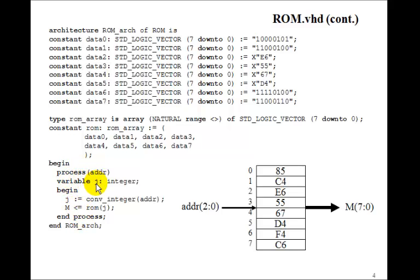We'll define a variable j of type integer, and then we'll set j equal to the address. Of course, we have to convert it to an integer. So this 3-bit address, 0, 0, 0 to 1, 1, 1, will get converted to the integer 0 to 7.